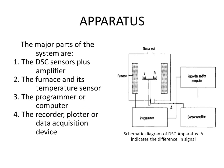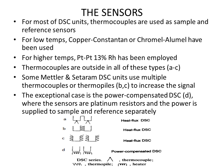For most DSC units, thermocouples are used as sample and reference sensors. For low-temperature work, copper-constantan or chromel-alumel thermocouples can be used. For high-temperature work, the thermocouple may be platinum/platinum-13% rhodium. In the diagram you can see the arrangement of thermocouples in different types of DSC — in all of these types, the thermocouples are positioned outside the pans.